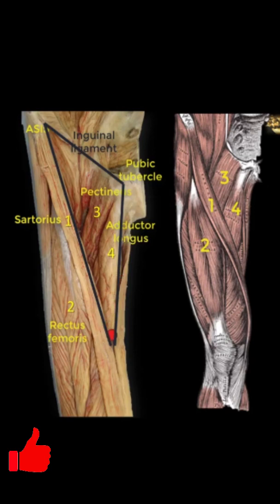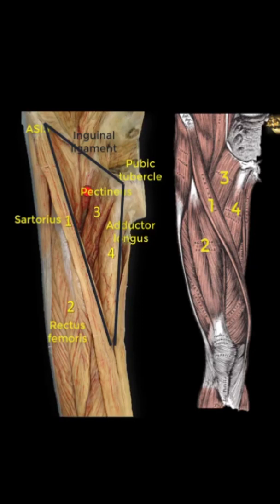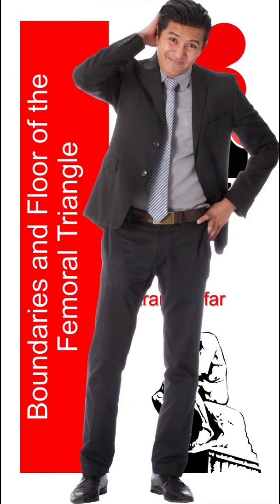If we are asked about the muscles on the floor of the femoral triangle from medial to lateral, they are: adductor longus, which also forms a boundary, then pectineus, and then psoas major and iliacus muscle.